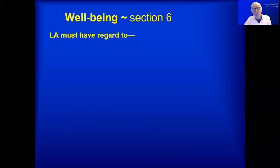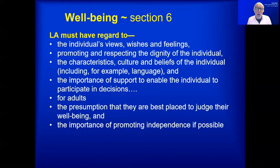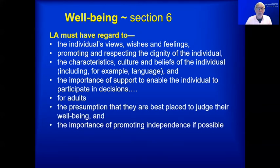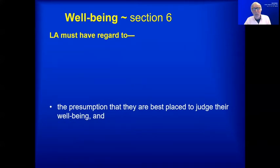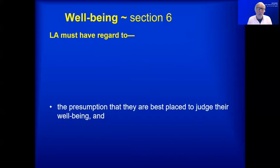The Act goes on to give further indications of the principles that must apply when promoting well-being — a long list covering many aspects one would expect relating to disability and caring. Perhaps most important is the last one: there is a presumption that individuals are best placed to judge their own well-being. The disabled person and the carer are the people who know best what support they need and what arrangements to meet that support should look like.